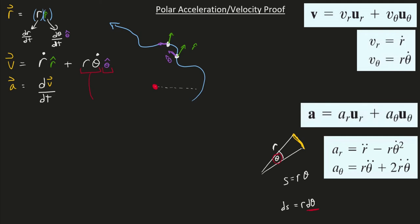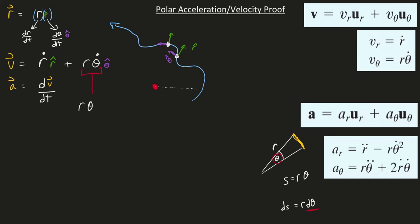Calculating the derivative of the scalar portion won't be too bad since there are no vectors in it — each one is just a number, r as a function of time, θ̇ as a function of time. So we apply Calc 1 product rule. For the derivative of the r·θ̇ chunk: r times the derivative of θ̇ is r·θ̈, plus θ̇ times the derivative of r, which is ṙ.